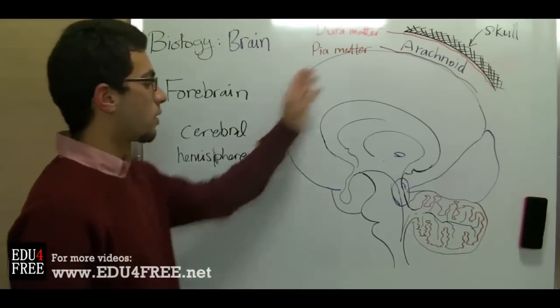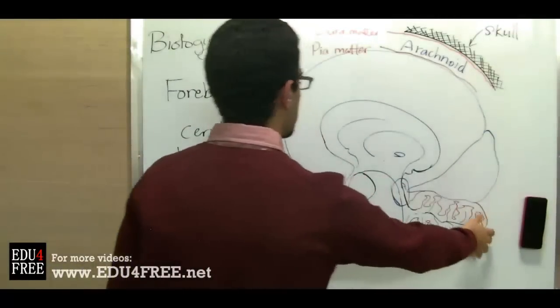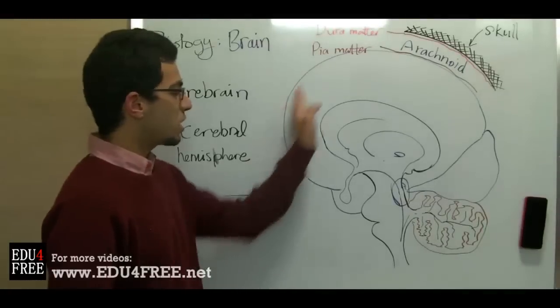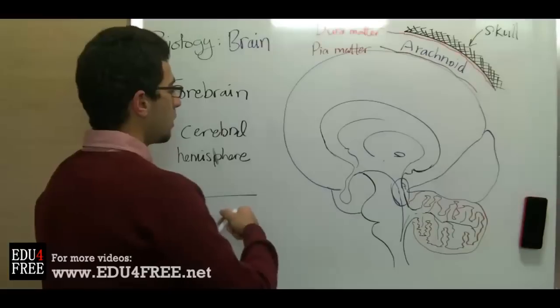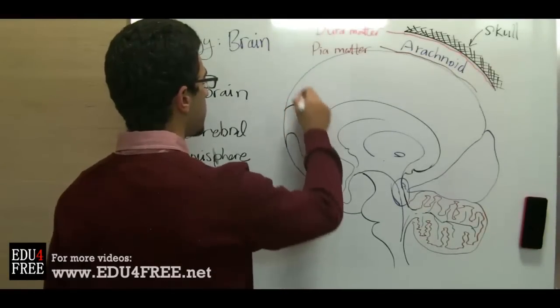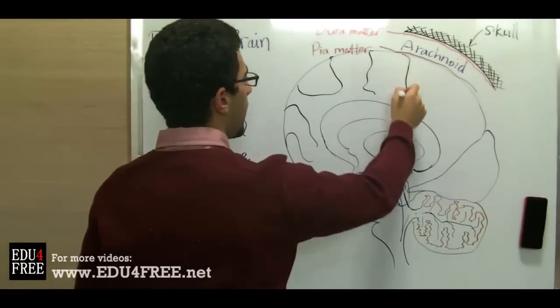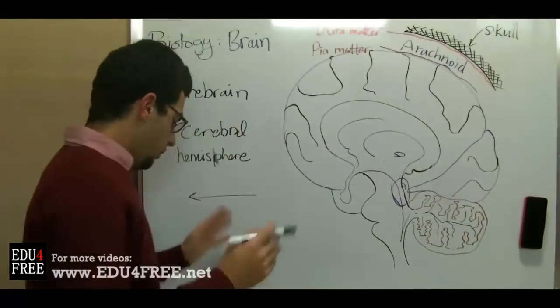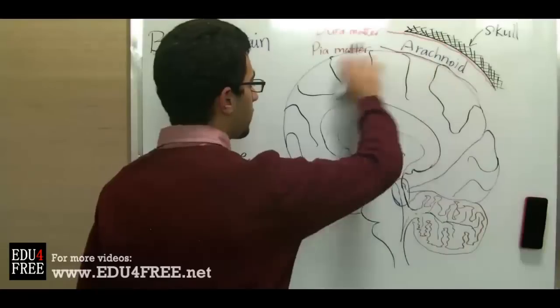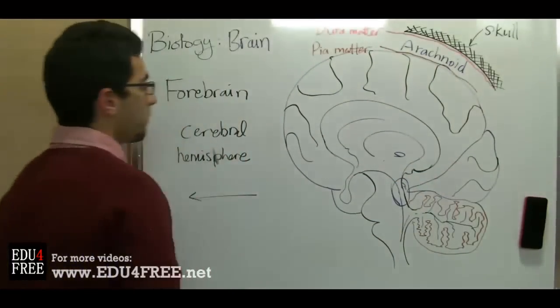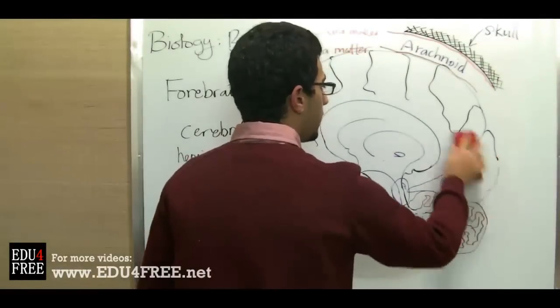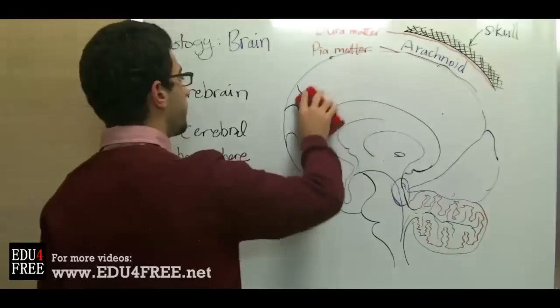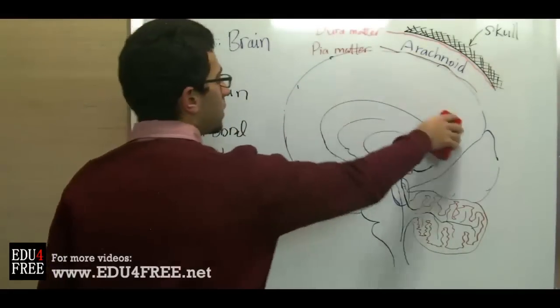Each hemisphere consists of a large number of grooves and fissures, as we can see in the image of any brain, and this of course increases the surface area of the brain. This part of the cerebral hemisphere is called the cortex. The cortex of each cerebral hemisphere is divided into a group of lobes.